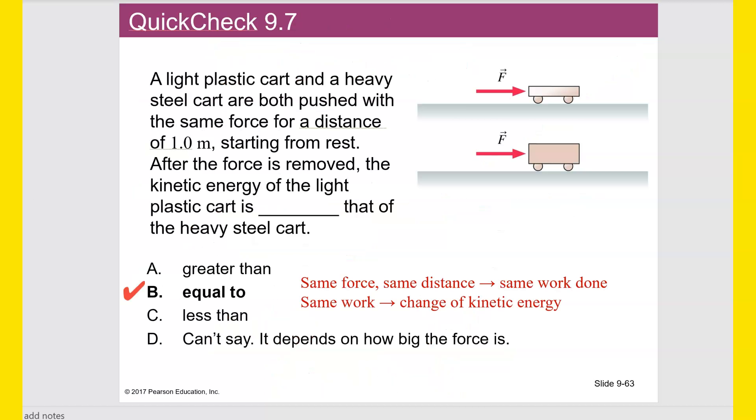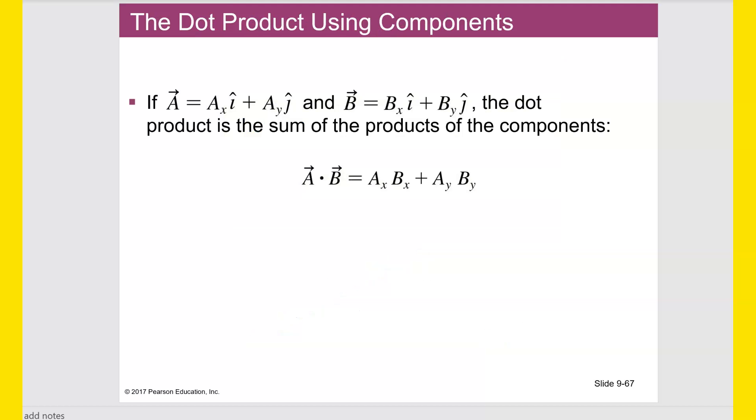All right, that is demonstrated more in this slide right here. So they wrote it here in this slide, in this linear combination form, where A is broken down to A sub X, I, and A sub Y, J, where I means the X direction, and J means the Y direction.